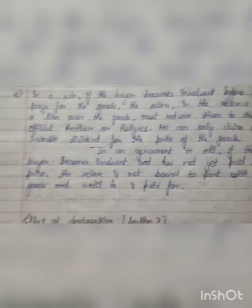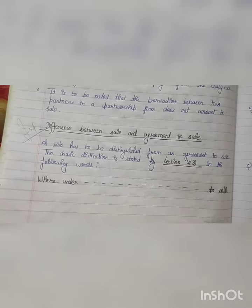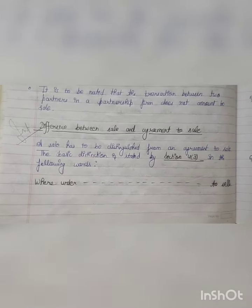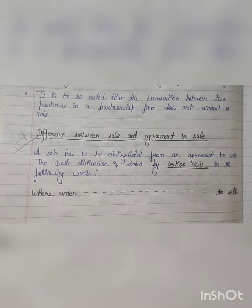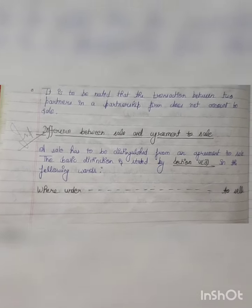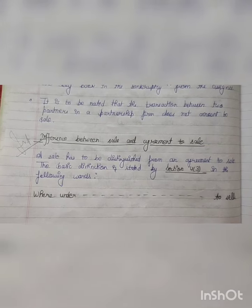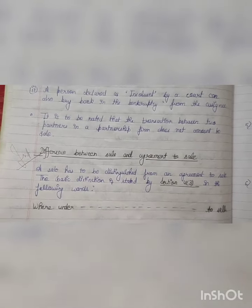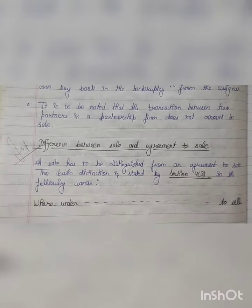In sale and agreement to sale, we have eight differences. You can see that it is very important for exam purposes — BALLB, 5-year course, or any course. If you have the Sale of Goods Act, then sale and agreement to sell is very important. If you don't understand it, you can see it again to understand it properly. We'll meet in the next class — till then take care, bye bye. Subscribe to my channel for more such videos. Thank you.